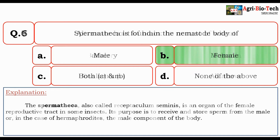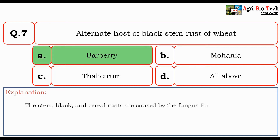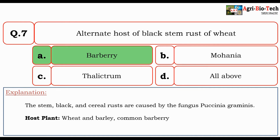Next question: The alternate host of black stem rust of wheat is — Barberry, Mahonia, Thalictrum, or all of the above? The correct answer is Barberry. Black stem rust and cereal rusts are caused by the fungus Puccinia graminis, and its host plants are wheat, barley, and common Barberry.